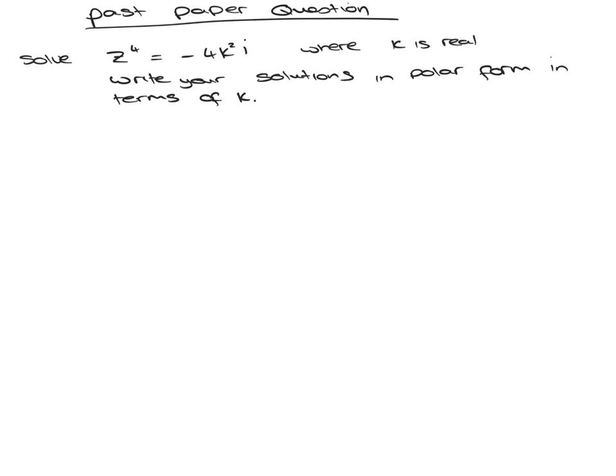Now we're going to look at a past paper question involving complex roots, and we're sort of doing the inverse de Moivre's here. So it's asked us to solve z to the 4 equals minus 4k squared i.